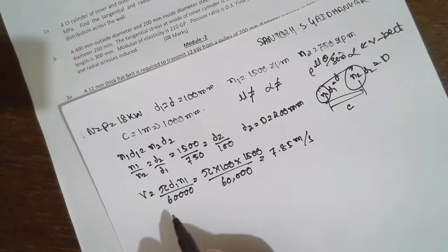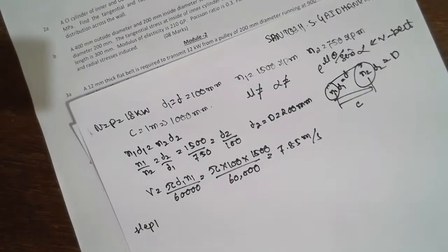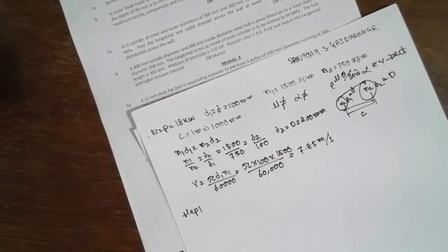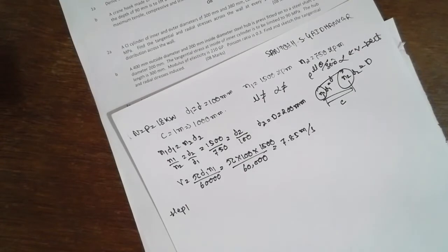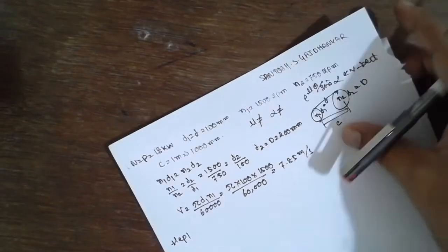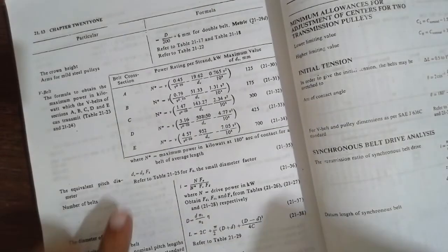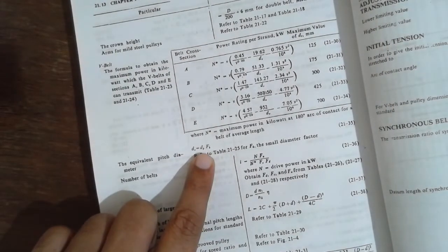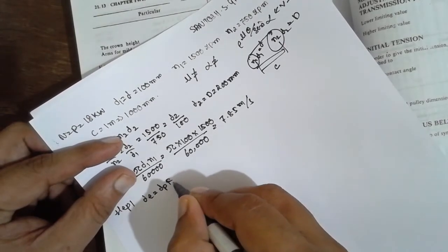Now the procedure starts. Step 1: use the data handbook — the Lingaiah handbook, Volume 1. From the handbook, the first formula we use is dE = dp × fb, where dp is nothing but D1. We have to find fb. fb is found by referring Table 21-25 in the handbook.